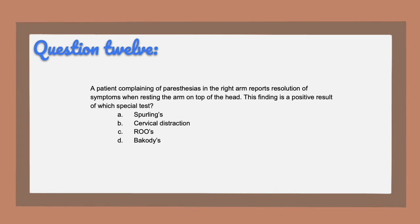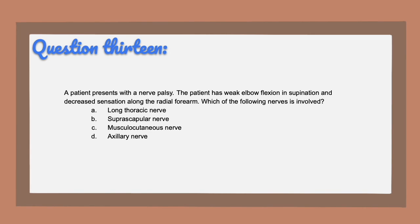Question twelve, the correct answer is D, Bakody's test. This is related to brachial plexus and thoracic outlet. Spurling's is a test for cervical radiculopathy where the examiner applies axial compression on the head to compress the cervical nerve roots. Cervical distraction is when the examiner distracts the head. Roos is the elevated stress test where both arms are in 90-degree abduction and external rotation while the patient opens and closes their hands. Question thirteen, the correct answer is C, musculocutaneous nerve. The long thoracic nerve involves serratus anterior and scapular winging. The suprascapular nerve innervates the supraspinatus and infraspinatus. The axillary nerve goes to the deltoids.